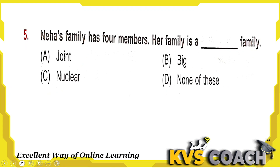Next question: Neha's family has four members — her family is a dash family. Four members means few members, perhaps father, mother, and one sibling. That is a nuclear family. In a joint family there are many members like grandparents, uncles, aunts, and cousins. So a four-member family is a nuclear family. Option C is the right answer.